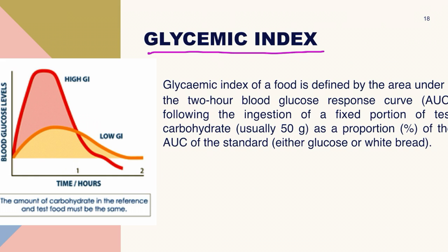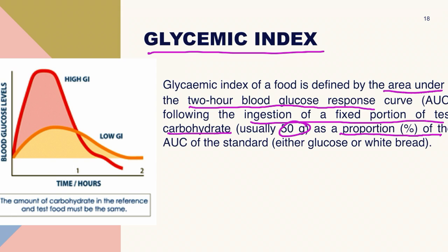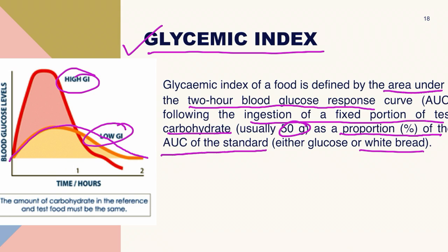Moving to glycemic index. The glycemic index of a food is defined as the area under the curve of the 2-hour blood glucose response following ingestion of a fixed portion of test carbohydrate (usually 50 g) as a proportion of the area under the curve for standard glucose or white bread. Simply put, glycemic index is the ability of a food to raise blood glucose level. High glycemic index foods are not recommended for diabetic patients; low glycemic index foods increase blood glucose at a steady rate with no spike and are recommended for diabetic patients.